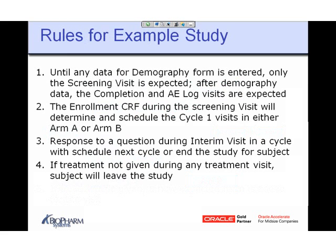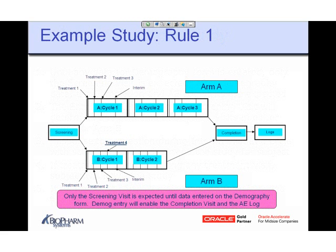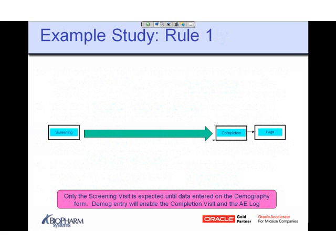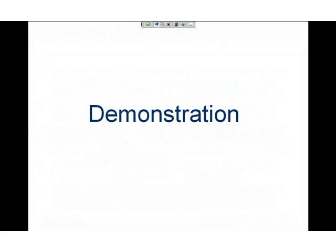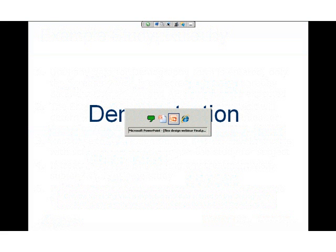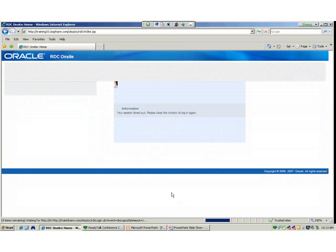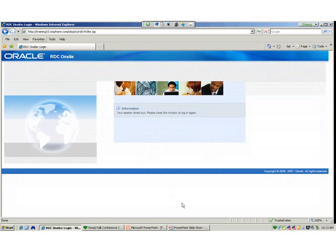Let's follow Rule 1 — only the screening visit is expected until data is entered on the demography form. When demography is entered, it enables the completion and log visits, so screening is the only one visible initially. Here we have the Oracle Clinical RDC interface. I'm going to take patient number one and press go — I timed out, so let me log on again.